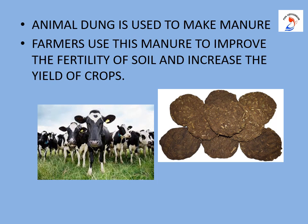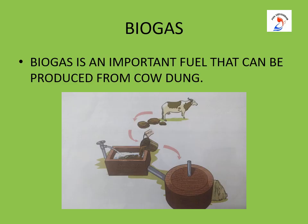The dung of some animals is used as manure. After harvest and before the next sowing, cows and sheep are allowed to graze on the farmland — their dung makes the land fertile. In villages, dried dung is also used as fuel. Cow dung cakes are used as fuel, and dung is also used to produce biogas, which is an important fuel that can be produced from cow dung.